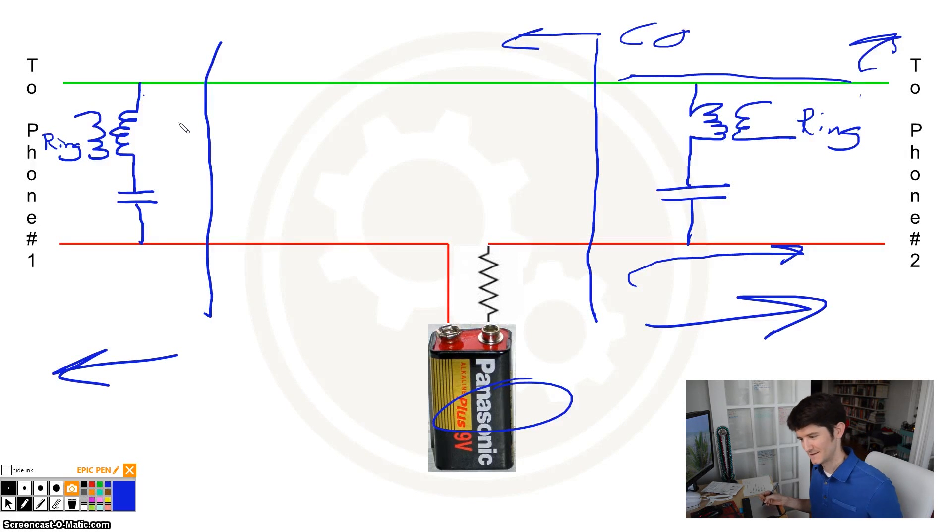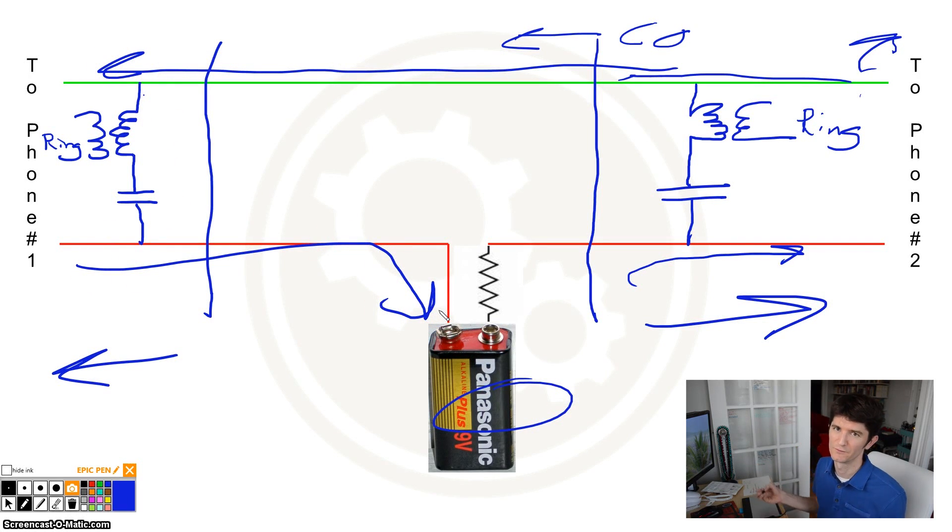In that case, you really have to pick up both instruments. If you pick up both instruments off-hook, then the current can flow all the way down to this phone, have a return path here, go back to the battery, and you get your full circuit. That's the issue with this little intercom system.